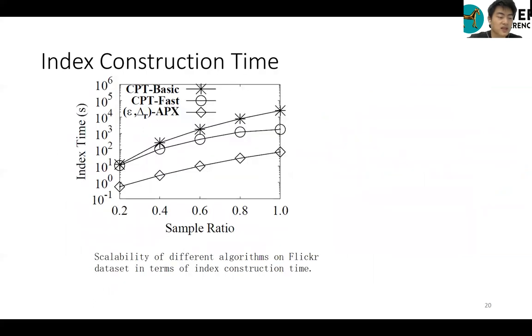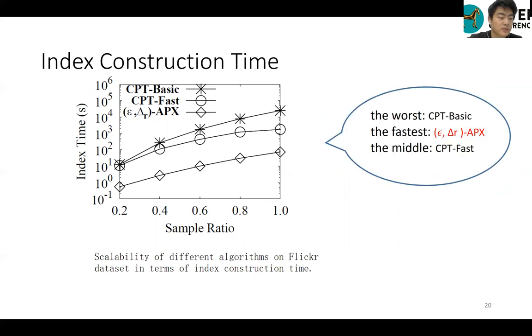We also reported on the time of indexing. Building the approximation index is faster than building the CPT index. Moreover, our CPT-fast algorithm is faster than the CPT-basic algorithm, which validates the efficiency of our top-down partition strategy.